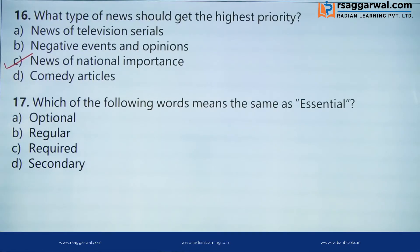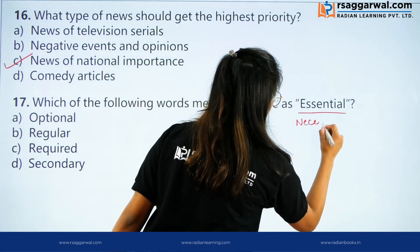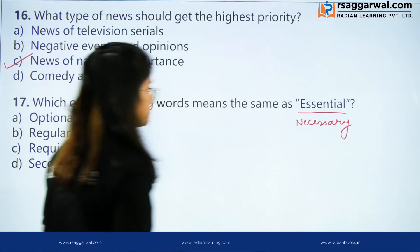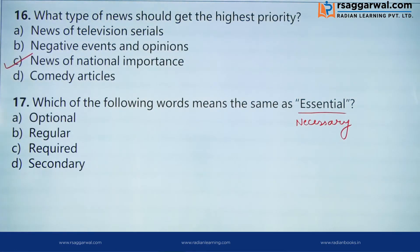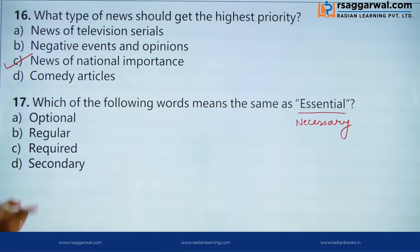Question 2: Which of the following words means the same as 'essential'? Essential ka matlab hota hai necessary. Our options are: Optional — optional means we have choices among them. Regular — regular means daily, har roz. Required — required means necessary, so this can be the correct answer. Secondary — secondary ka matlab hota hai doosra; jaise agar aapke paas do pens hain aur aap ek hi pen se likhte hain, that is your favorite pen, toh jo doosra pen hoga that will be secondary, so it does not mean necessary. So the correct option is C — Required.